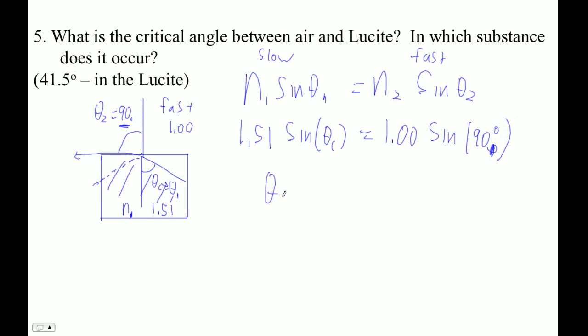ends up being the inverse sine of 1.00 divided by 1.51. And it's always going to be the same thing, the same general form. It's the inverse sine of the ratio of the indices of refraction. It's always, of course,